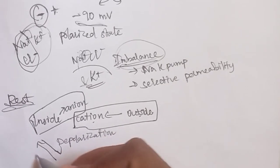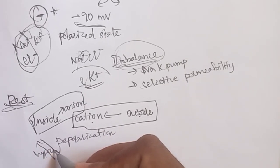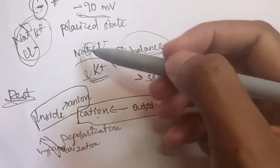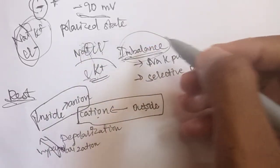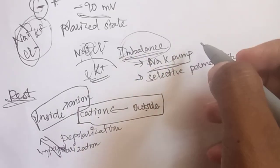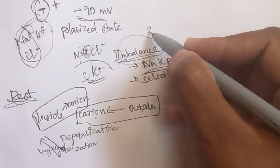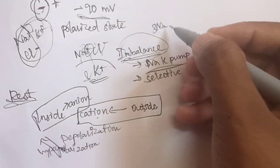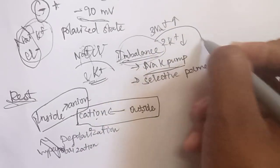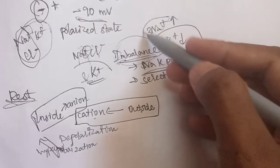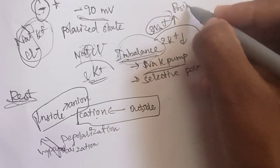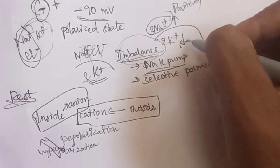Hyperpolarization — the anion is the same. If you move it, it will be easy to move with a pump. The pump is called the Sodium-Potassium Pump, also called the Electrogenic Pump. It pumps 3 sodium out and 2 potassium in. So sodium is moved out, making positive charge outside and negative charge inside. So this is a type of imbalance.